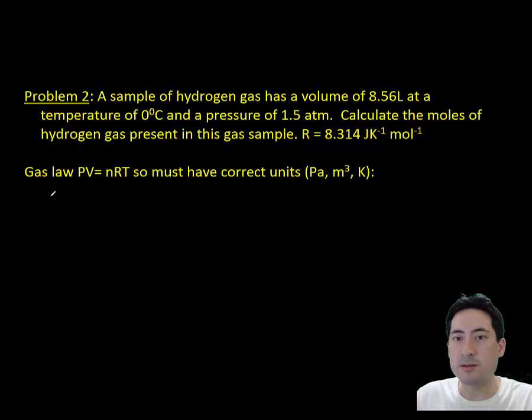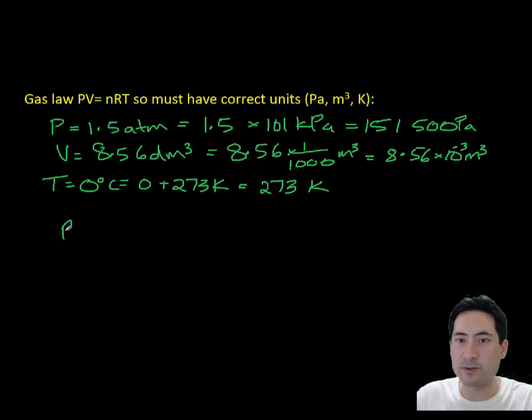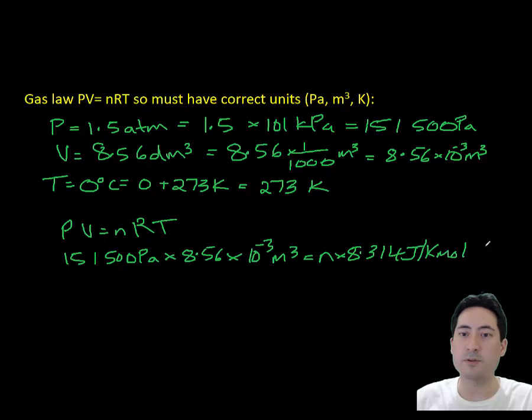The second problem here is using the PV equals nRT equation. You have a list of conditions here. It's most important that you've changed the pressure to pascals, the volume to meters cubed, and the temperature to Kelvin. Once you've done that, you can do your substitution. The gas law R is in your data booklet and that gives you a final value of 0.57 moles.